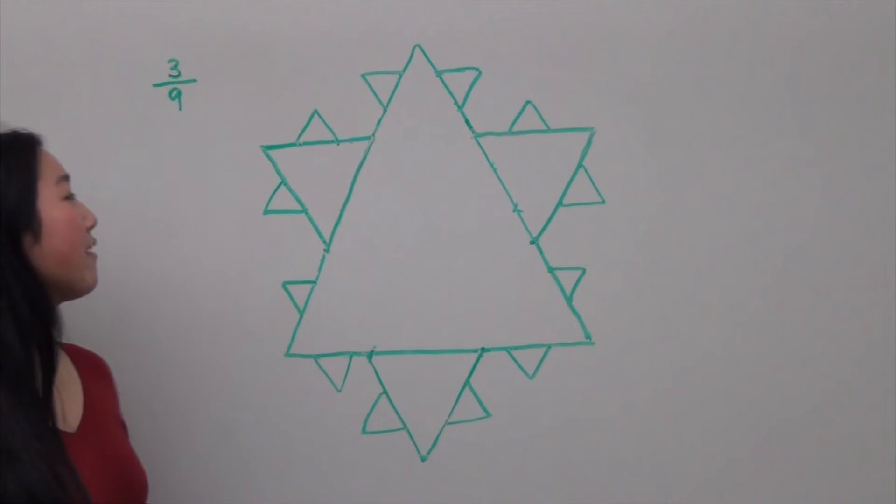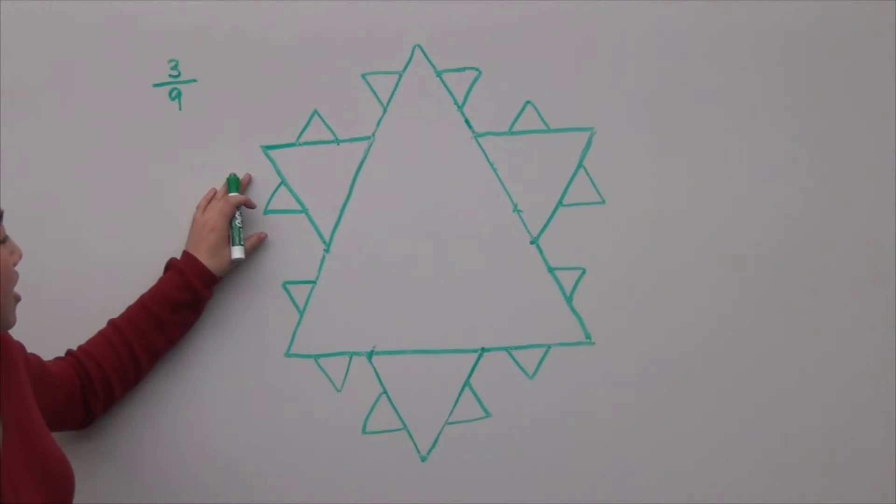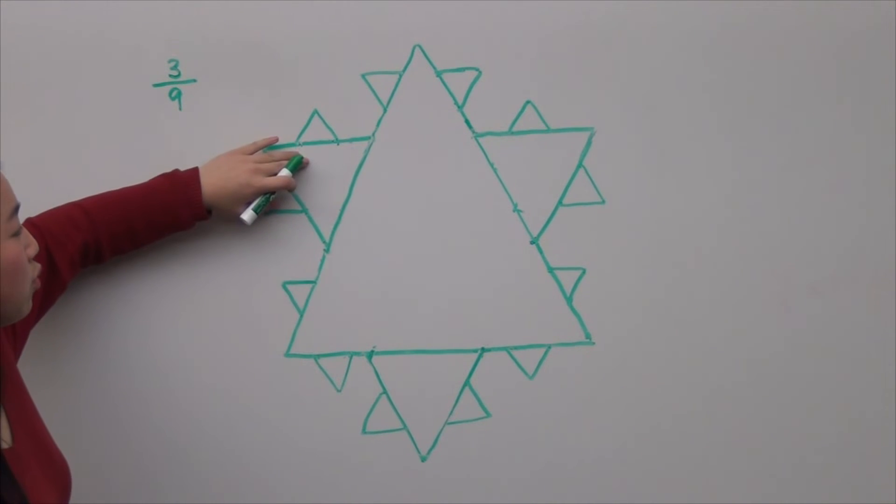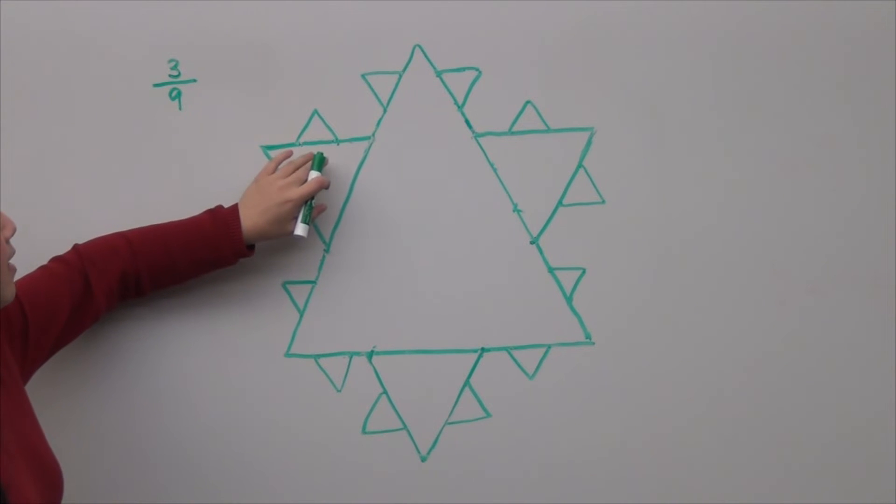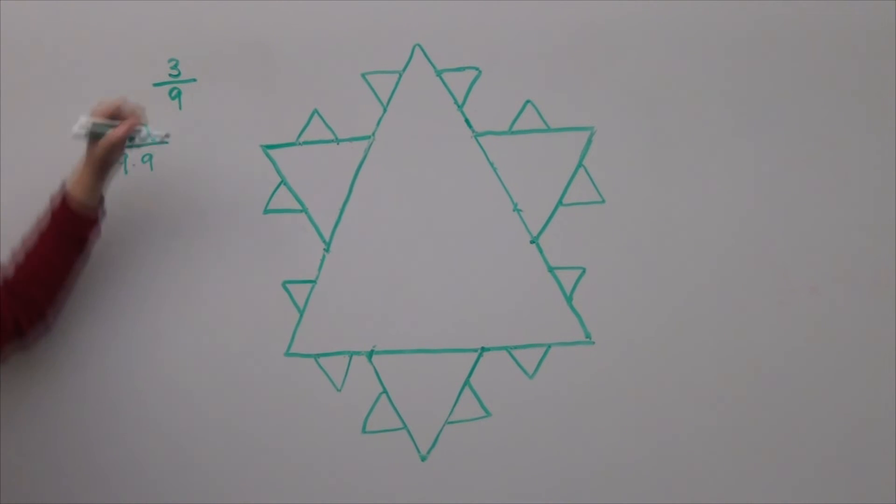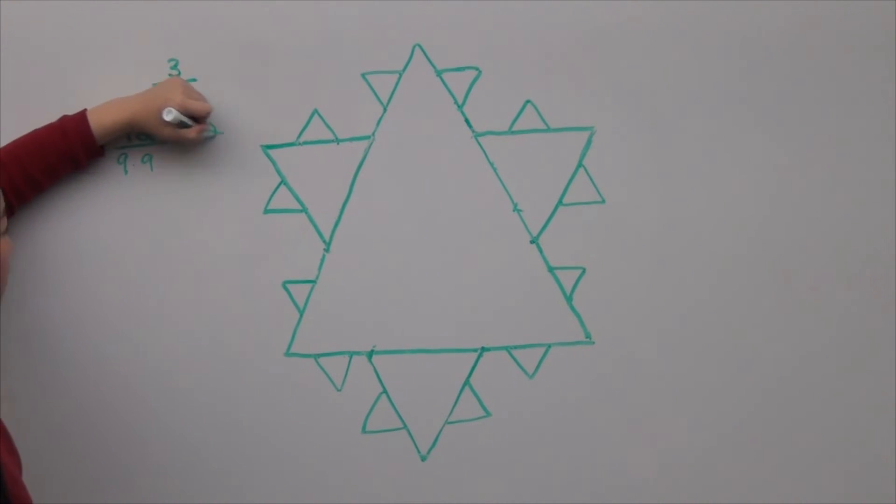In this next iteration, we've added twelve triangles. Each triangle is one-ninth the area of the previous triangle. If we divide the previous equilateral triangle to nine equal equilateral triangles, that is one-ninth the area of the original. So the area we've added is twelve new triangles, each one-ninth times one-ninth the area of the original. And this is equal to twelve-eighty-firsts.